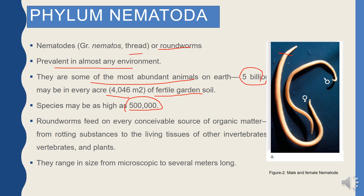Round worms feed on every conceivable source of organic matter — rotting things, tissues of vertebrates, invertebrates, and plants. If you eat any vegetable or fruit you may not notice them, as they are nematodes. Some are very much microscopic while some are several meters long.